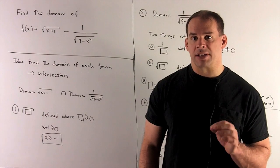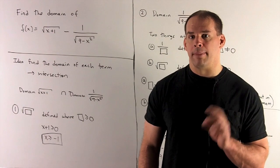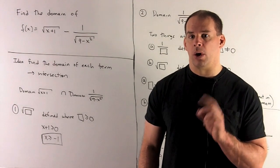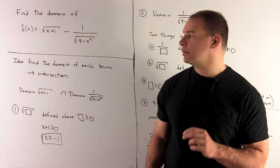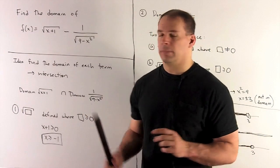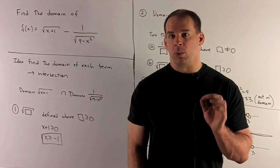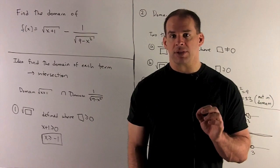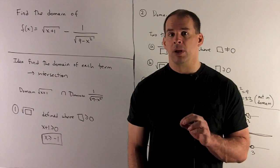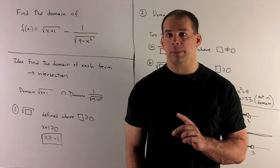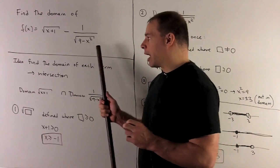Find the domain of the function f(x) = √(x+1) - 1/√(9-x²). We're taking the domain of a function, so we need to worry about two things: we're not allowed to take the square root of a negative number, and we're not allowed to divide by 0. In our case, both of these are going to be problems.